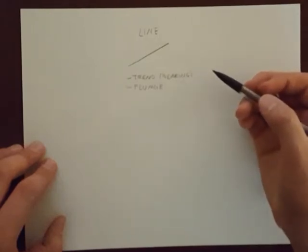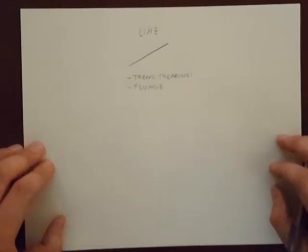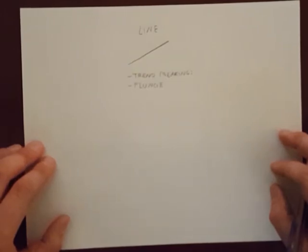This sounds similar to strike and dip, but it's very important to keep trend and plunge separate from strike and dip in your mind. A plane dips perpendicular to its strike, while a line trends in the direction it plunges. Strike is a horizontal line, a line with plunge zero, but trend is only a direction.